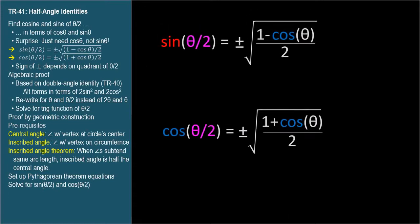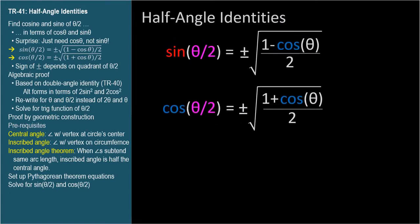Interestingly, the two identities are the same except for the positive or negative sign inside the radical. Also interestingly, they both depend only on the cosine of theta — you don't need to know sine theta.